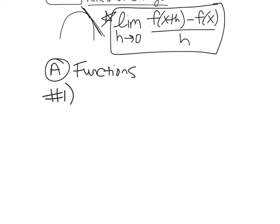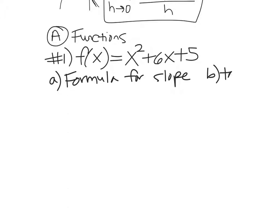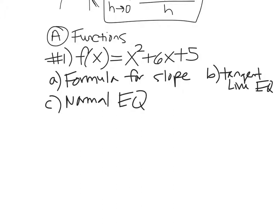Let's take f of x equals x squared plus 6x plus 5 and go through the whole thing. We're going to: A, find a formula for the slope of the line — it's going to have x in it; B, find the equation of the tangent line; and C, find the normal line equation. I might also ask you to graph everything.